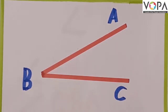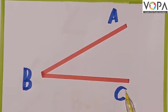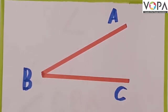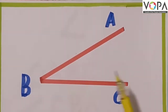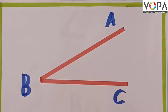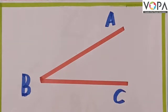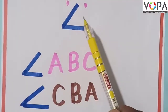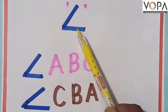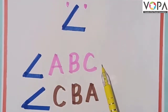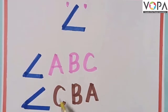Repeat it: vertex. The lines BA and BC are the arms of angle ABC, and B is the vertex of angle ABC. Now we read the angle name: angle ABC or angle CBA. Look at this sign — this symbol represents angle. We can say angle ABC or angle CBA.